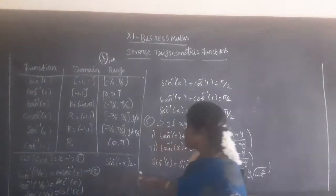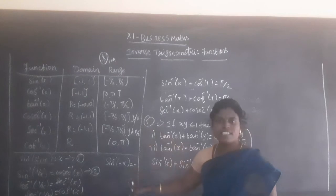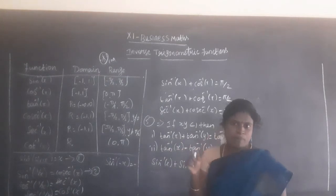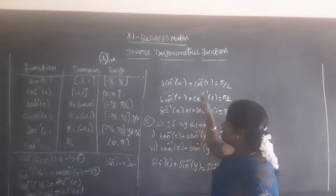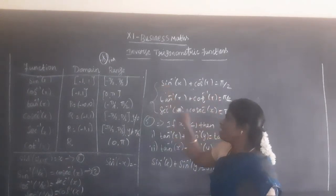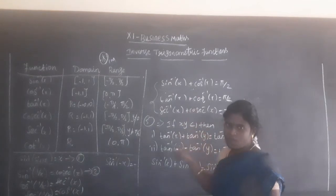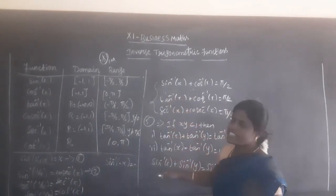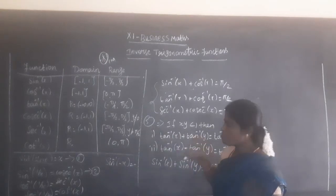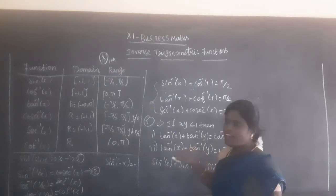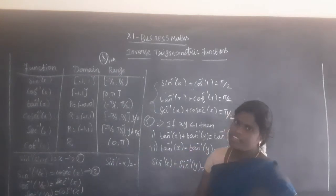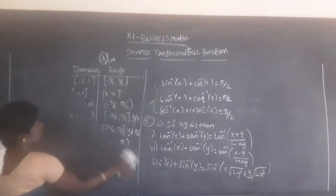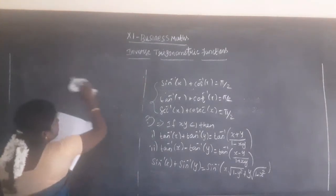To summarize: the third property involves sin inverse of minus x. The reciprocal relationships: sin with cosecant, cos with secant, tan with cot. The third formula involves negative arguments; the fourth formula involves complementary pairs summing to π by 2.